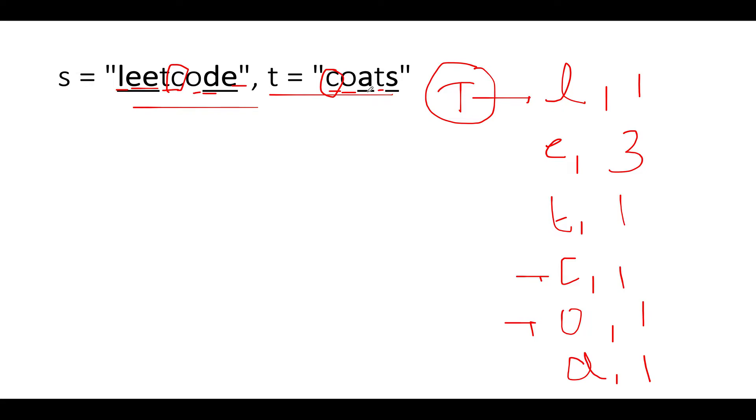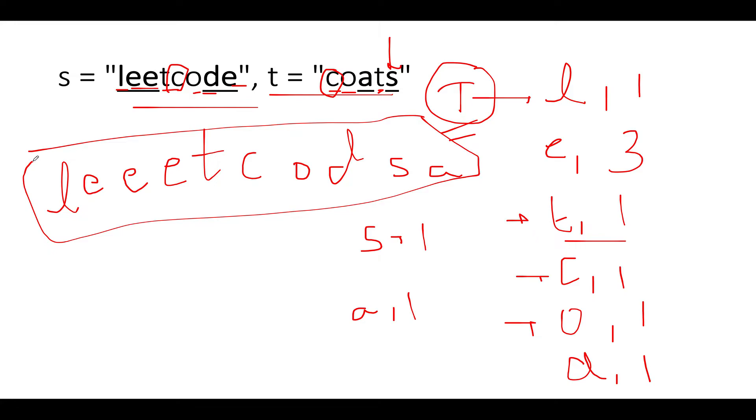There are more characters that should be part of that final string coming from t. We have covered c one time, o one time. We haven't covered a, so a again should be part of the final string with frequency one. We have t which is already covered. The final one is s, which should also be present in that string with frequency one.